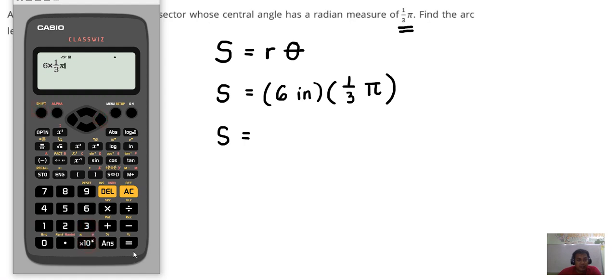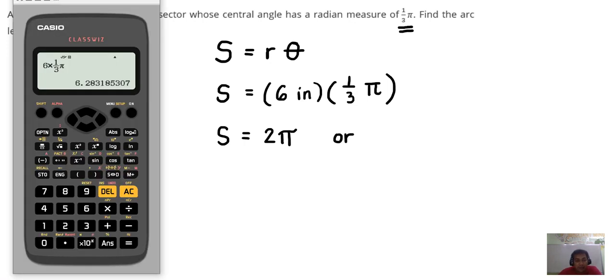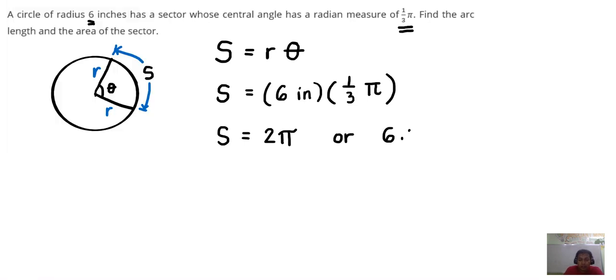two pi. So it's equal to two pi, or, in three decimal places, that is 6.283. And the unit should be in inches. The unit is inches because this is length - this is an arc length.